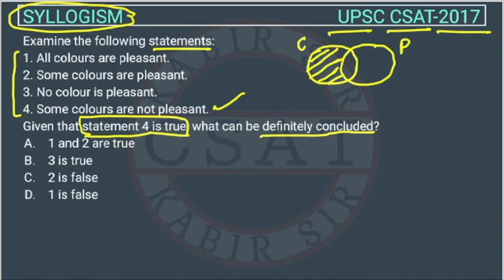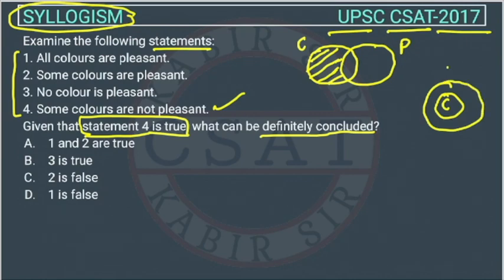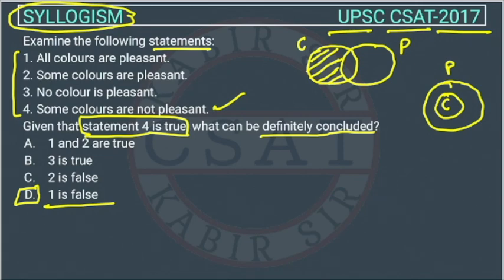Now we have to check the other statements. Statement one is: all colors are pleasant. That means the color circle would be entirely inside the pleasant circle. This is not possible, because the question itself says some colors are not pleasant — so both are contradictory. Therefore, the first statement is false. In option D, it is given that the first statement is false.